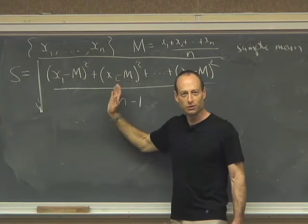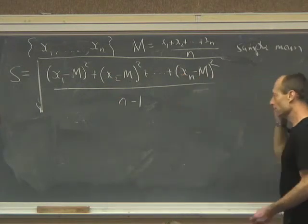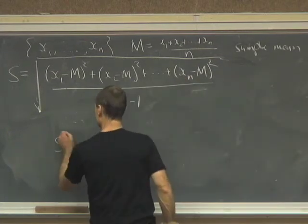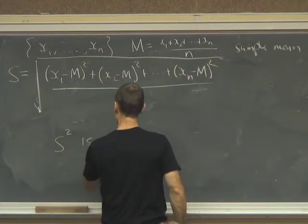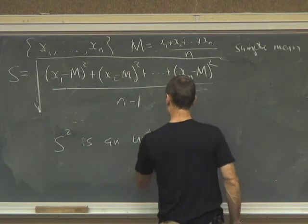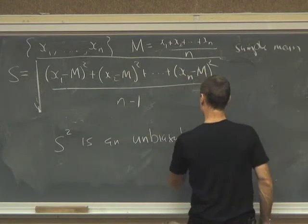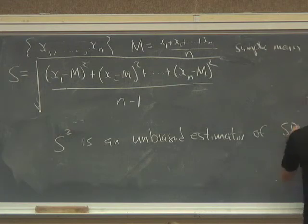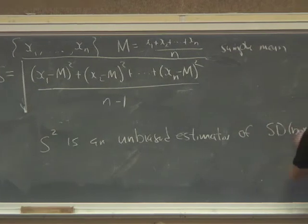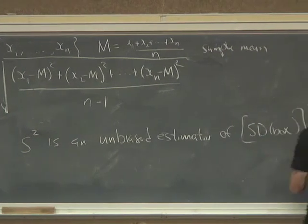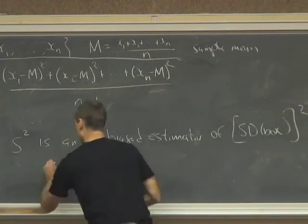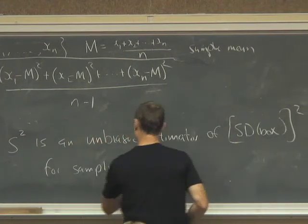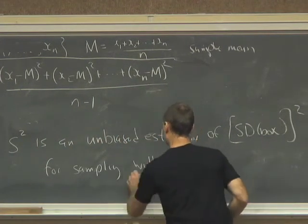So far so good? OK, so the technical story is the following, that S squared is an unbiased estimator of SD of the box squared for sampling with replacement.